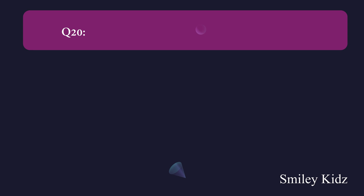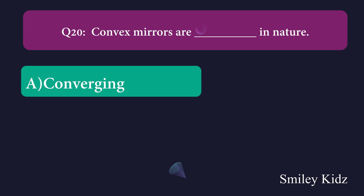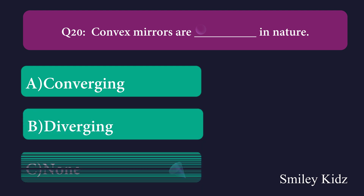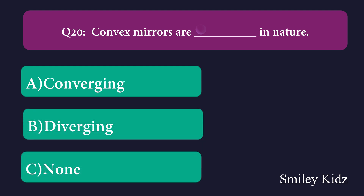Question number twenty: Convex mirrors are dash in nature. Option A: converging, Option B: diverging, Option C: none.